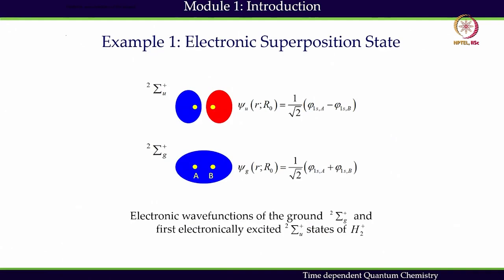The real test of understanding is to solve some problems. In the next two examples we will cover: one is the electronic superposition state — how do we create an electronic superposition state — and the other is the vibrational superposition state. We will start with the electronic superposition state and the example of H₂⁺. When H₂ makes a bond, it comes from atoms A and B, and two 1s orbitals linearly combine together. This is called the LCAO method — linear combination of atomic orbitals.